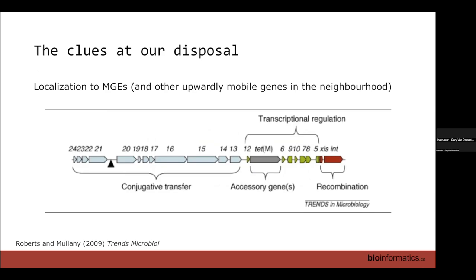Another clue is guilt by association. If the gene you're interested in is localized near other genes implicated in mobile genetic elements, that is a good clue. Here we have the AMR gene flanked by genes for conjugative transfer, genes for excision agents, and integrases. This gives us the sense that this antimicrobial resistance gene may have been transferred and is mobilizable because it's harbored within a larger segment of genes that have the characteristics of mobile genetic elements.